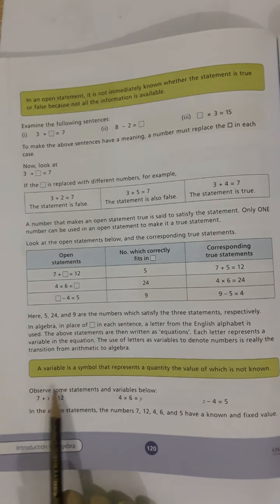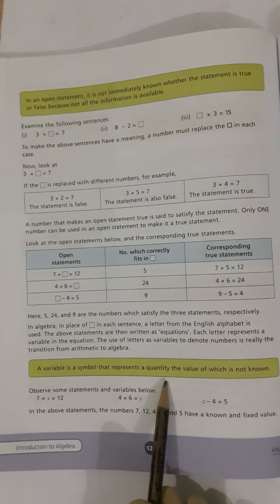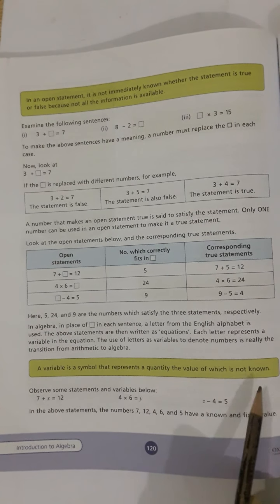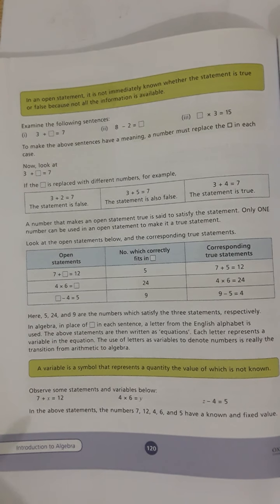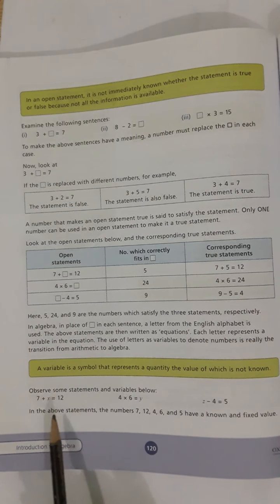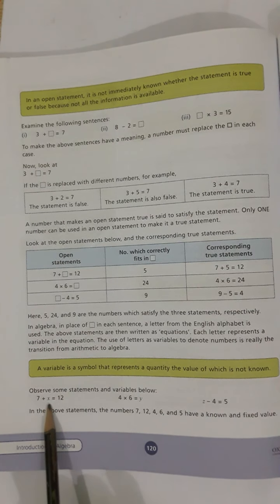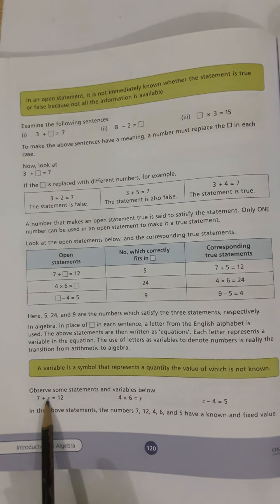A Variable is a symbol that represents a quantity, the value of which is not known. Variable woh cheez hai jo unknown ho — jaise 7 plus x equals to 12 mein, yeh x unknown hai. Toh yeh x is called a variable.